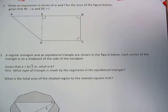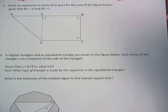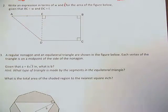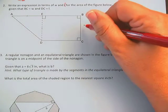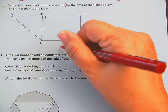Alright, problem two. Write an expression in terms of width and length (this should really be a scripted L) for the area of the figure below, given that BC equals W and DC equals L.